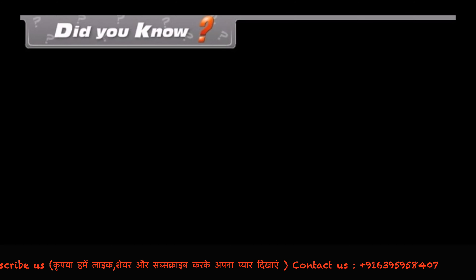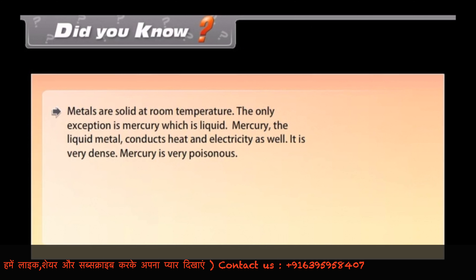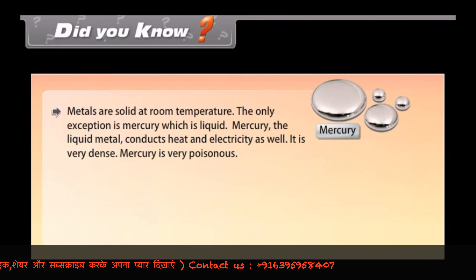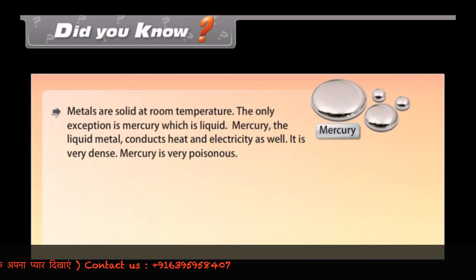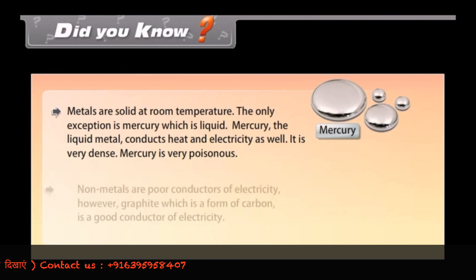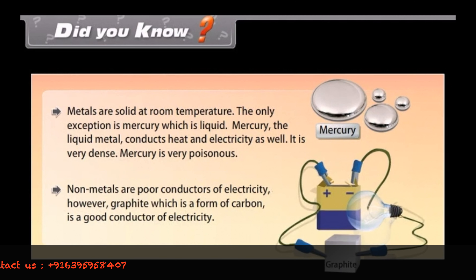Did you know? Metals are solid at room temperature. The only exception is mercury, which is liquid. Mercury, the liquid metal, conducts heat and electricity as well and is very dense, but mercury is very poisonous. Non-metals are poor conductors of electricity. However, graphite, which is a form of carbon, is a good conductor of electricity.